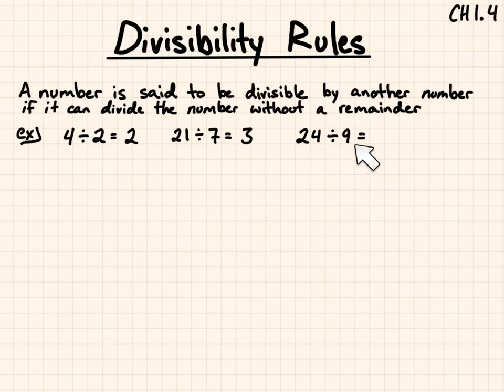24 divided by 9 equals 2 with 6 remainder because 2 times 9 is 18 and there would be 6 remaining. That would be not divisible.